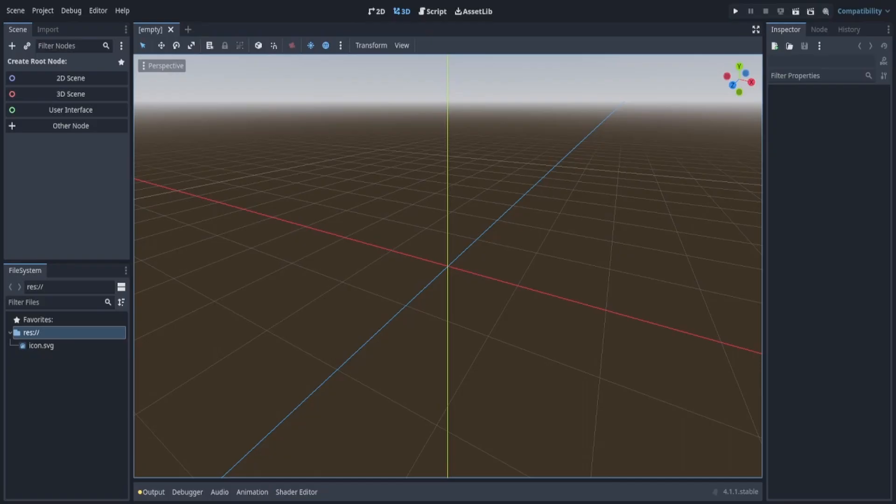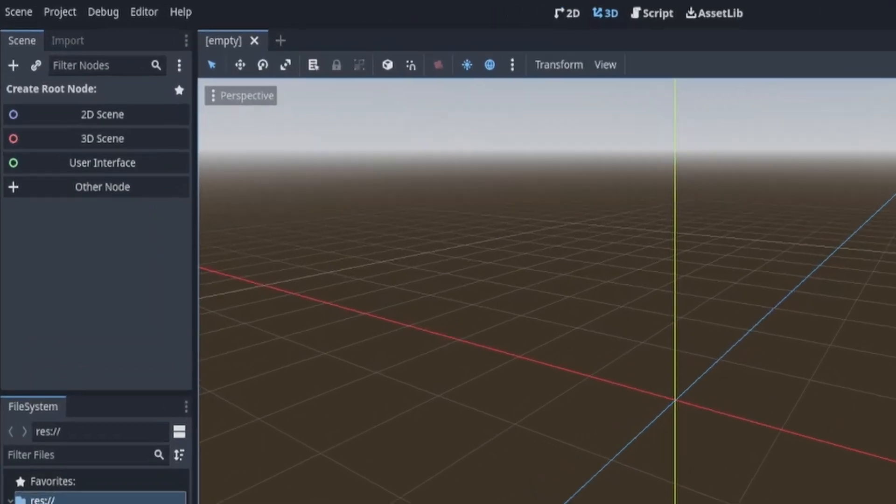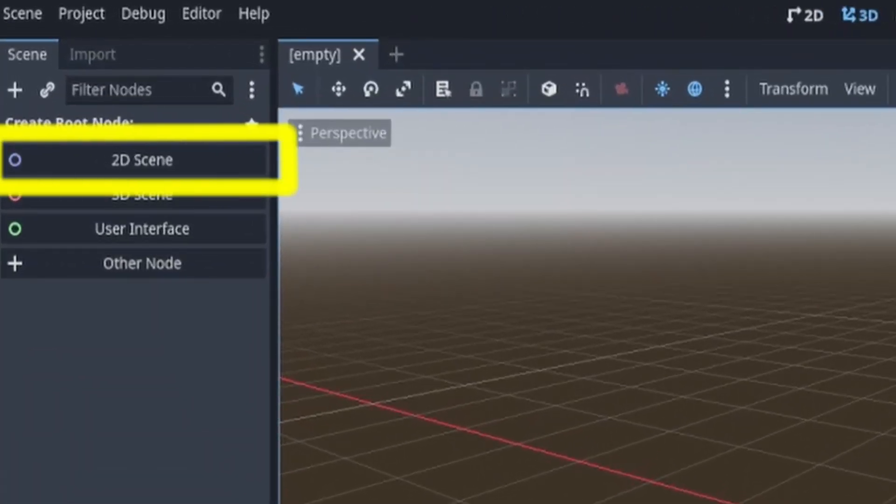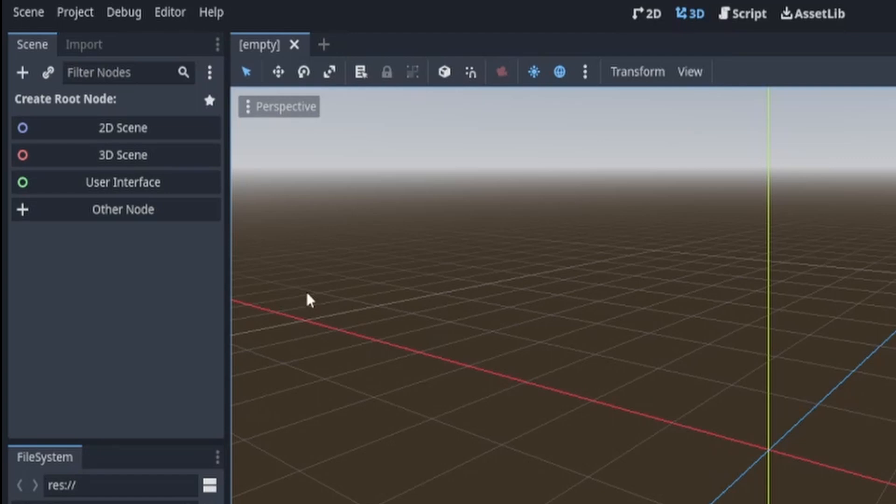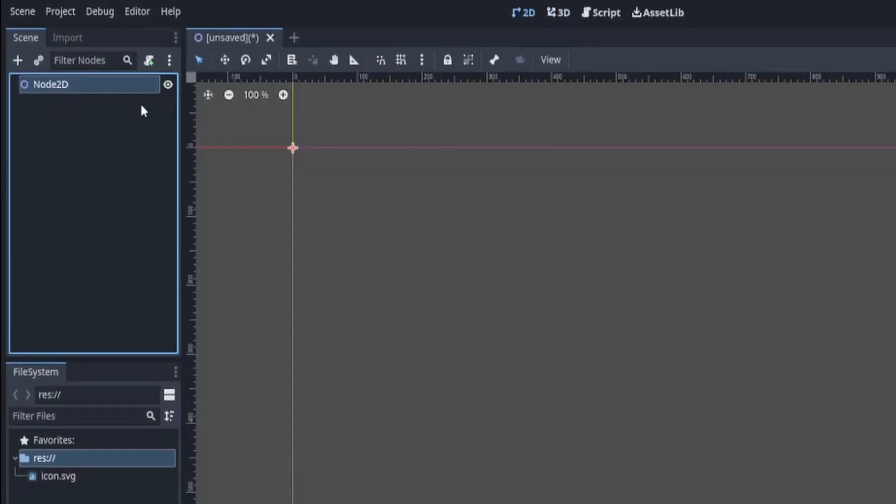Node 2D can be found on the top left of an empty screen, here where it says 2D scene. And if we click it, a 2D scene will appear.